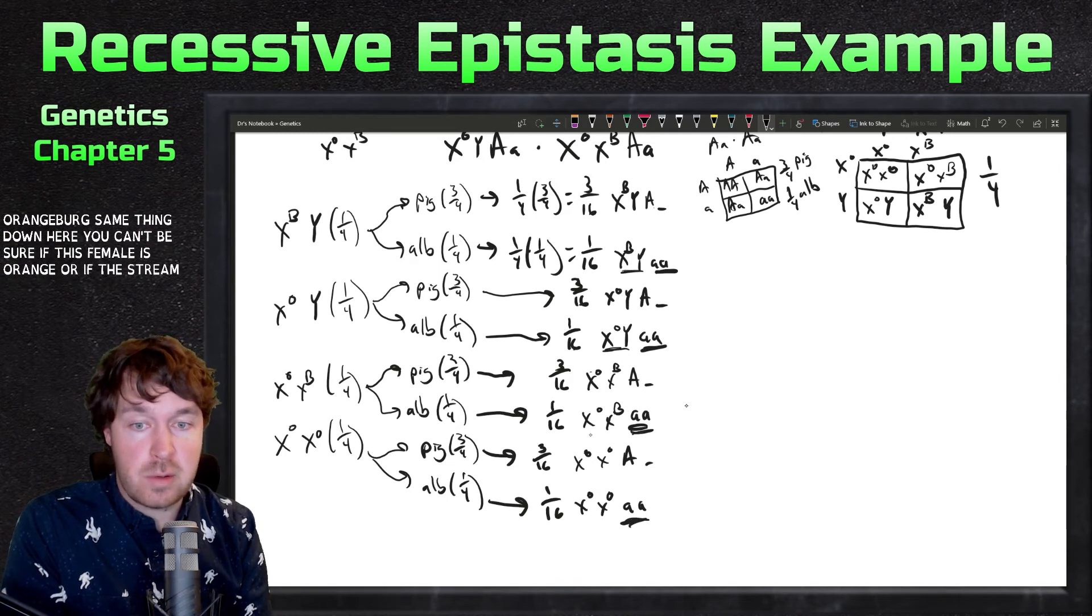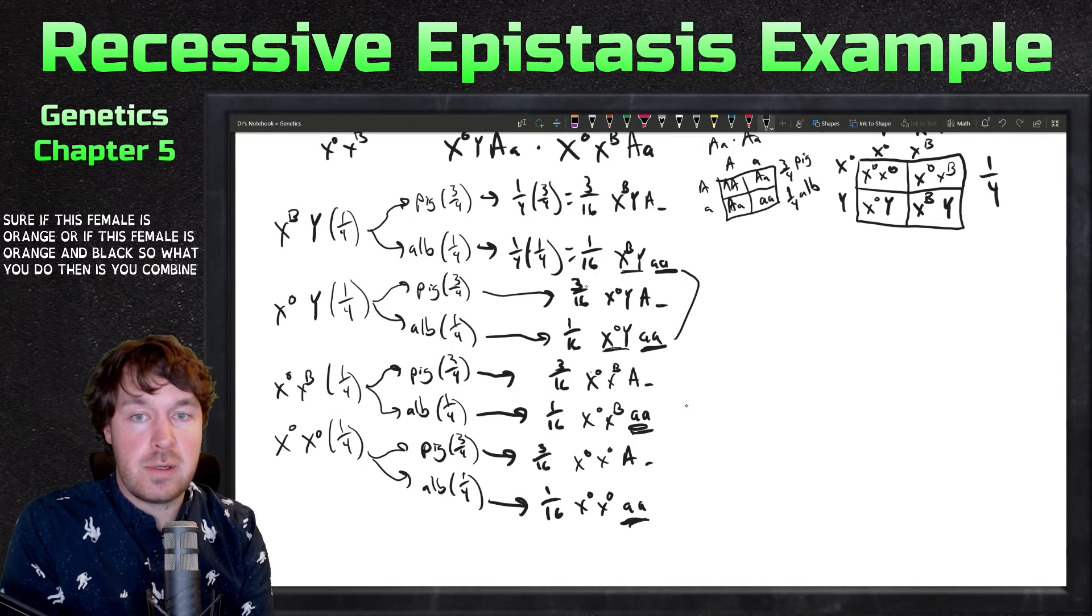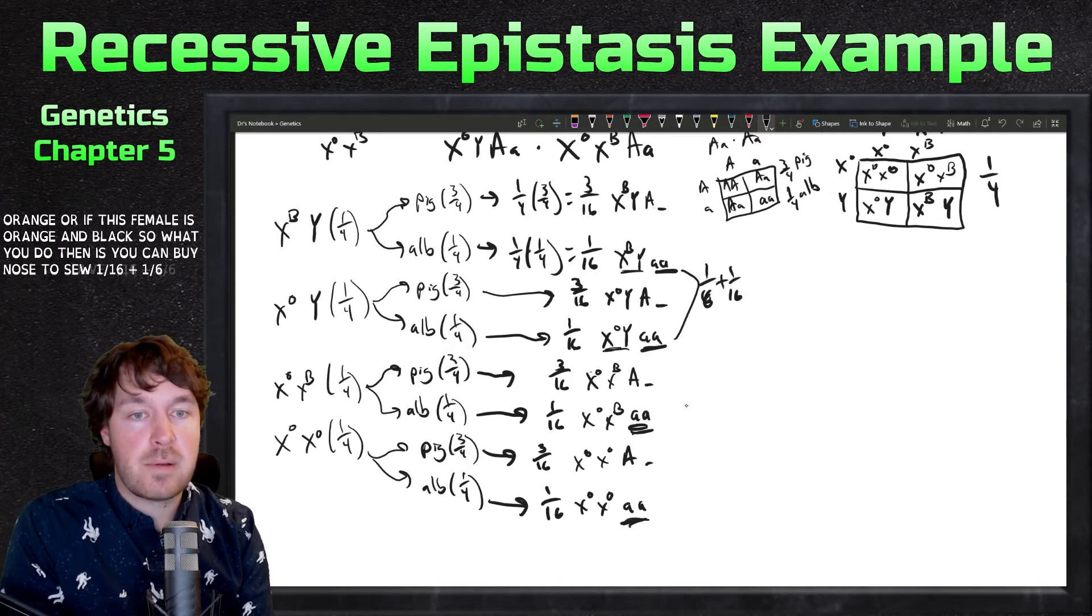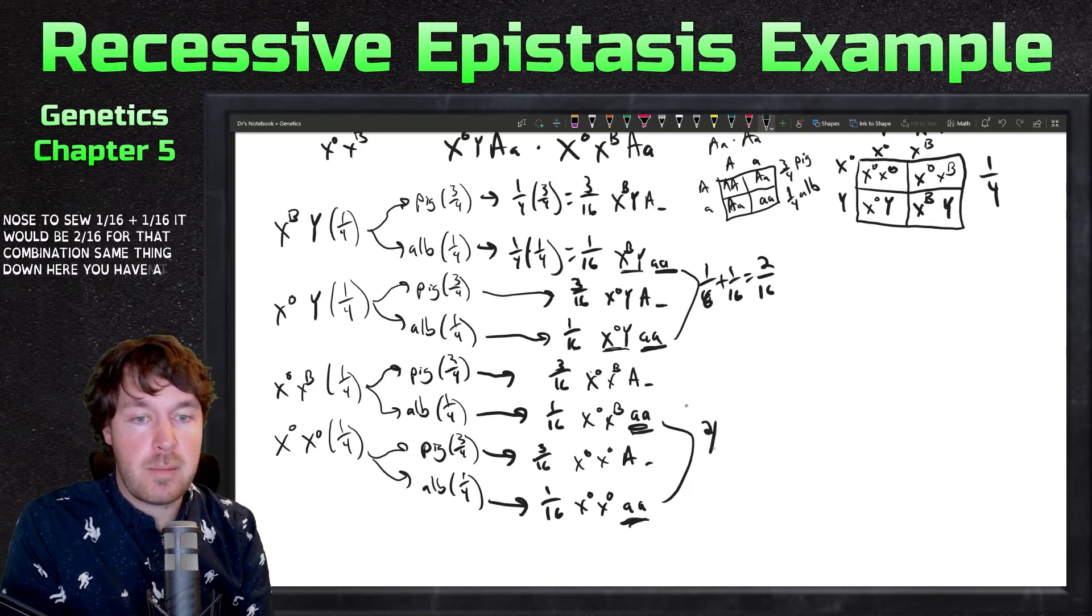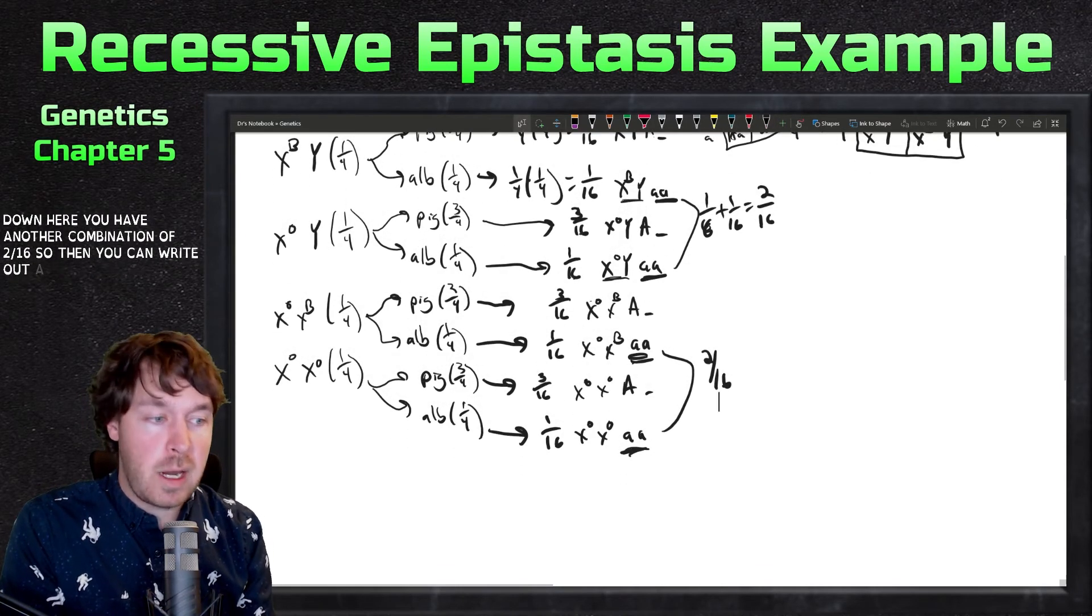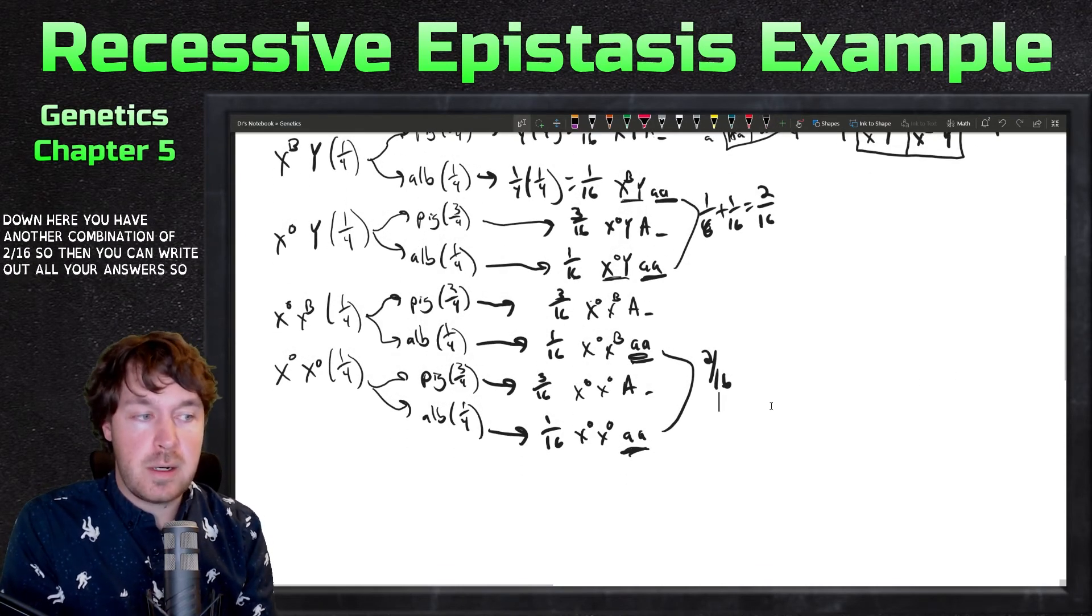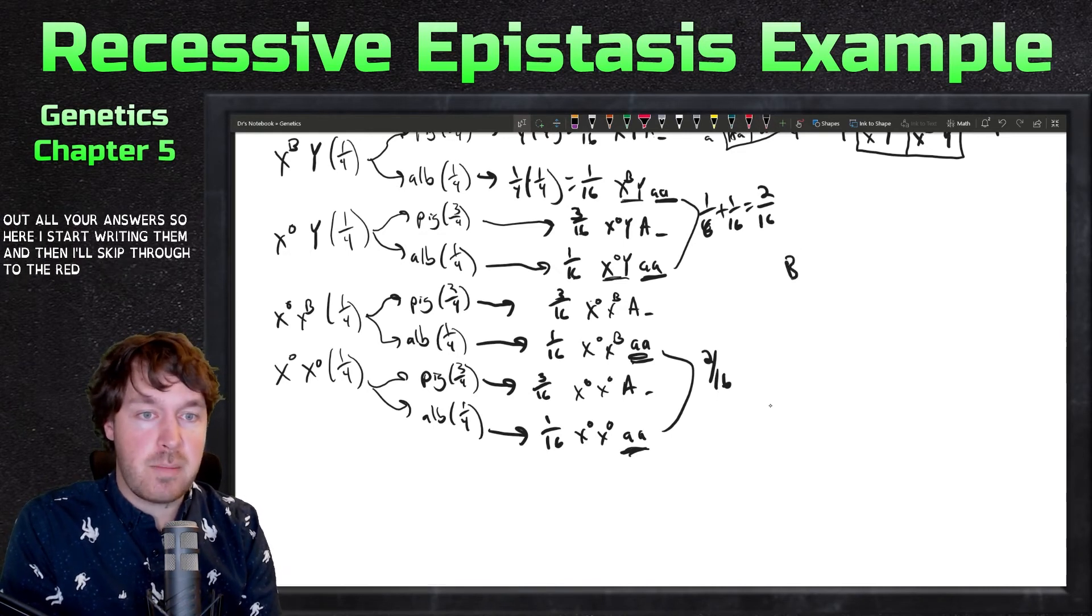Same thing down here - you can't be sure if this female is orange or if this female is orange and black. So what you do is you combine those two. One-sixteenth plus one-sixteenth would be two-sixteenths for that combination. Same thing down here - you'd have another combination of two-sixteenths. Then you can write out all your answers.